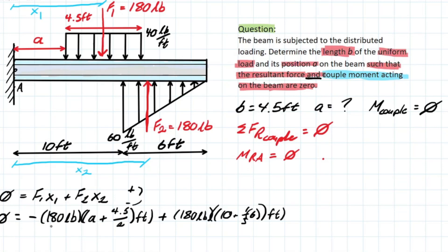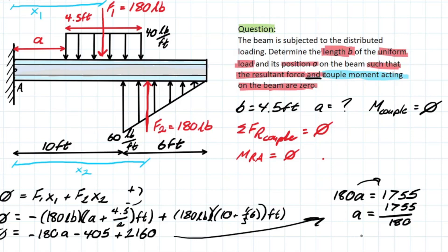Now we're pretty much just solving for this variable A. So how are we going to do this? We just figure out what numbers we're left with. We have negative 180A minus 405 plus 2160. Then once again, we're going to isolate for A. We can bring this over to the other side. We have 180A is equal to 1755. And then we have A isolated, bringing this over to divide over 180. And A is going to be in the unit of feet, 9.75 feet.